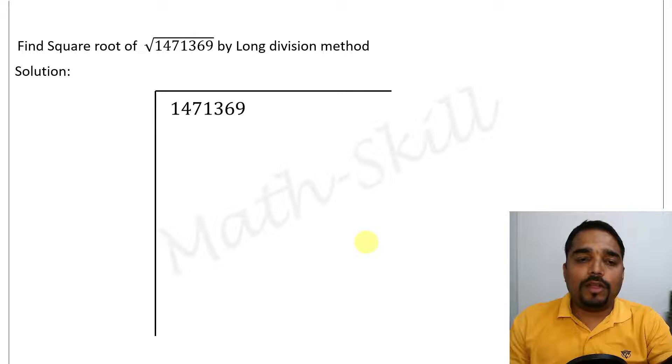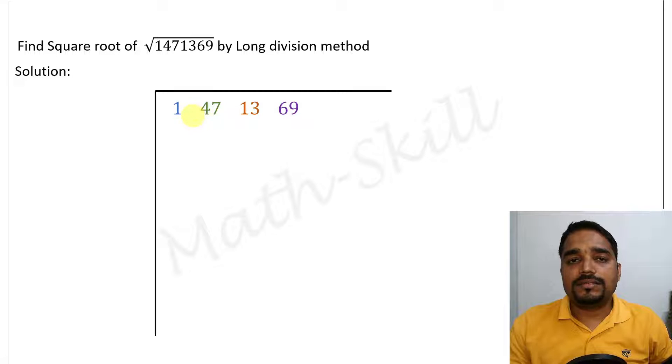In order to apply long division method, we will have to start pairing the digits from its units place. That is 69 as one pair, 13 as one pair, 47 as one pair, and we would be left with number 1. So 1471369 is rewritten like this. Now we have to start with the first pair.